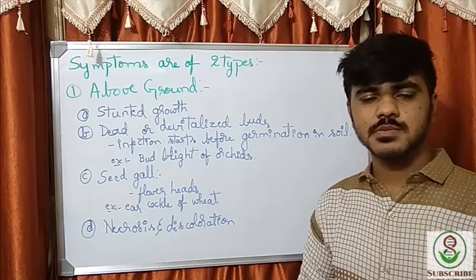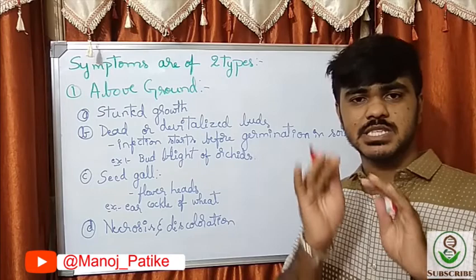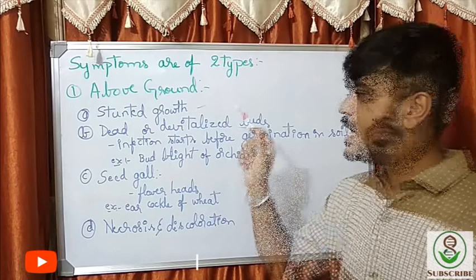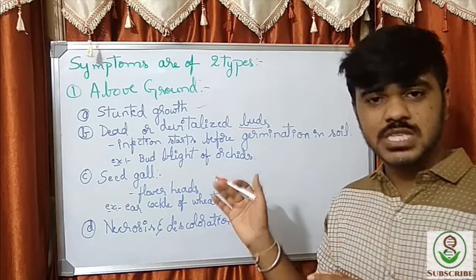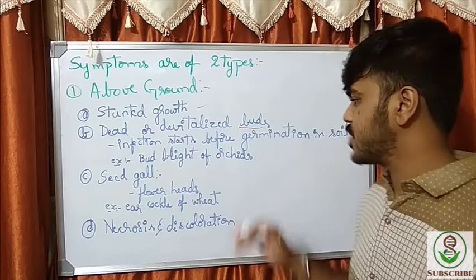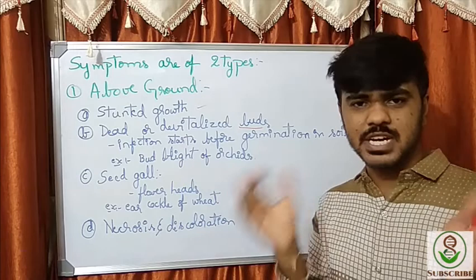Among the symptoms, there are above-ground and below-ground symptoms. First, above-ground symptoms: the very first is stunted growth — the growth is limited and decreases. Next comes dead or devitalized buds, meaning the buds are either dead or not productive. For this symptom, the infection would have started before the germination of the seed itself, and during this stage they especially exhibit bud blight of orchards.